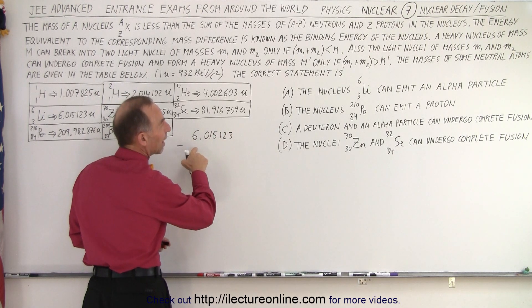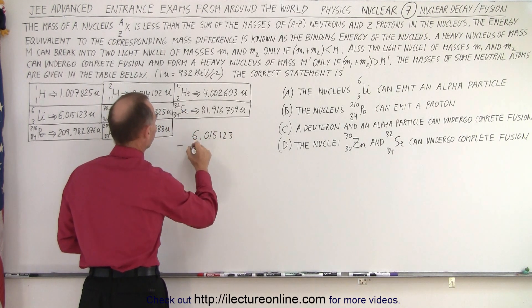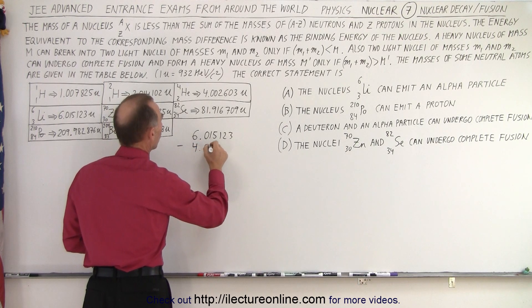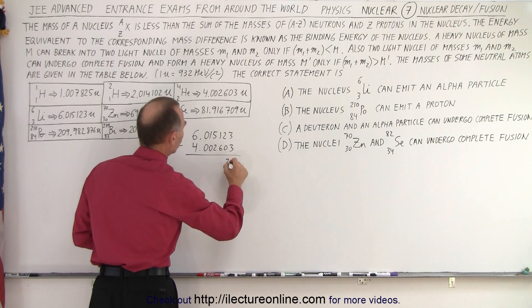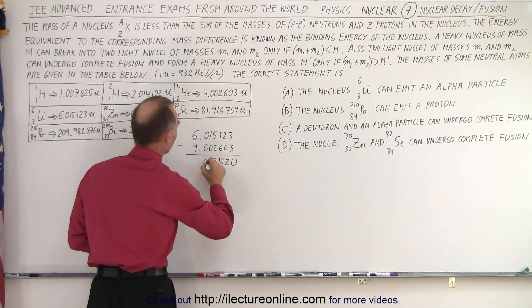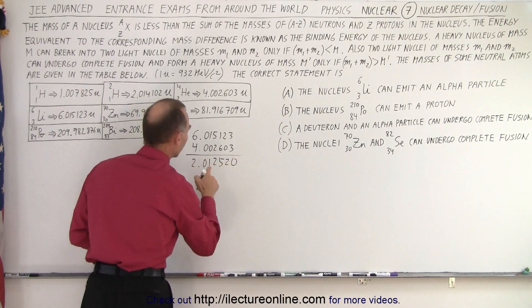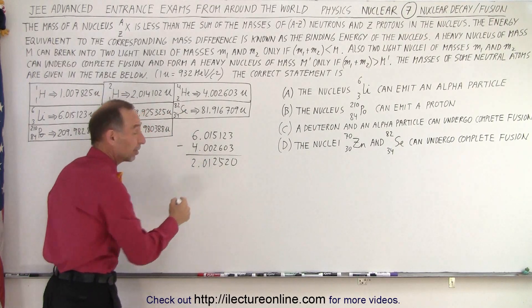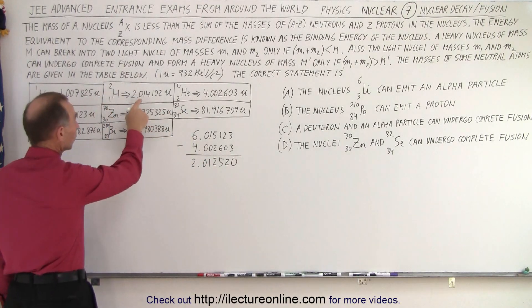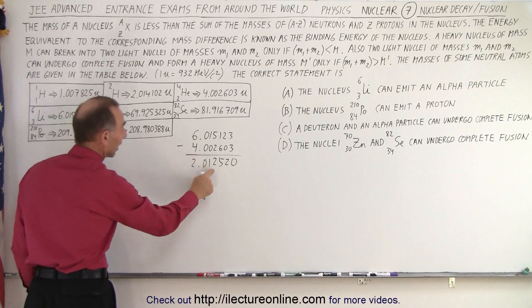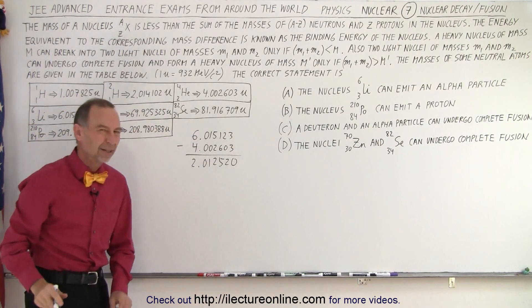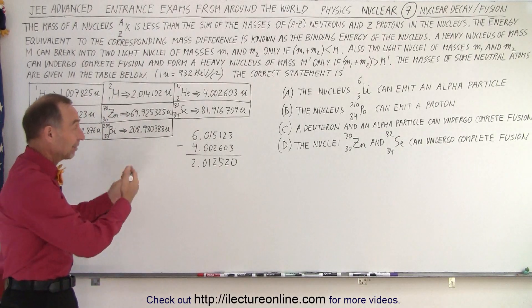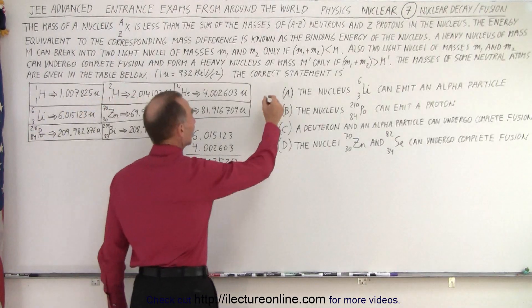The mass of an alpha particle is 4.002603. So we get 2.01252, that would be the mass of the remaining particle, which would have to be a deuteron, which is right here. And notice that's not enough mass to make a deuteron, so the reaction is not possible. We already knew that, but that's how we check. So definitely A is not possible.